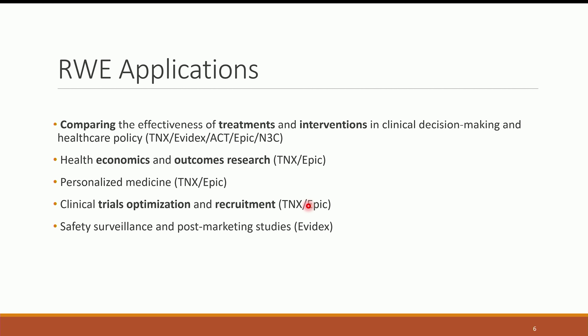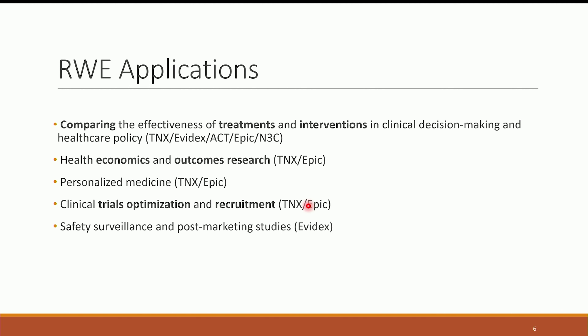Health economics and outcomes research — a good example is our studies with emergency medicine when a new drug came to market and they wanted to see if other healthcare organizations had already adopted it and what the effect was. Personalized medicine is self-explanatory. Clinical trials optimization and recruitment: a pilot study on Stevens-Johnson syndrome — with roughly 12,000 cases nationally and 5,000 with usable data — sparked a clinical trial at UTMB. Safety surveillance and post-market studies are an area we're just now entering.